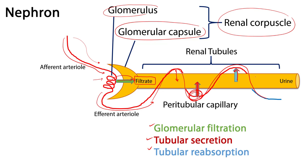Anything remaining in these tubules by the end of this process is urine, which is conducted through the various portions of the conductive part of the kidney, out into the ureters, to the urinary bladder, and then out to the external environment via the urethra.